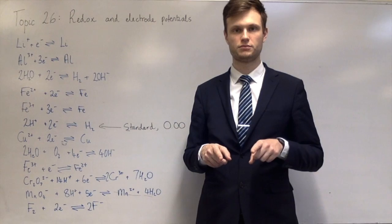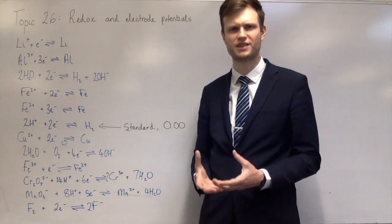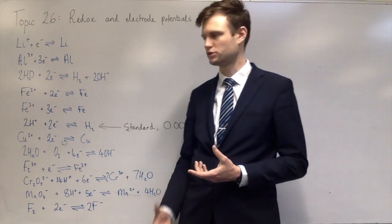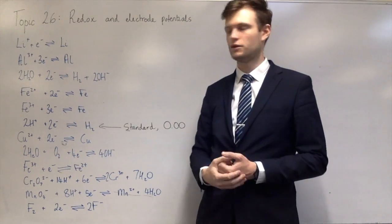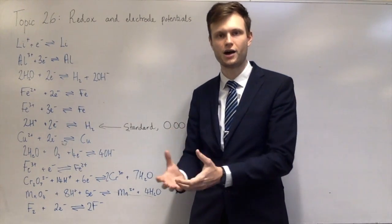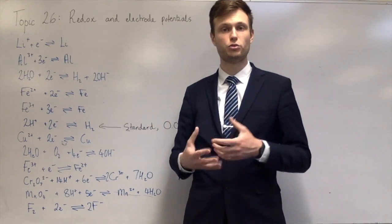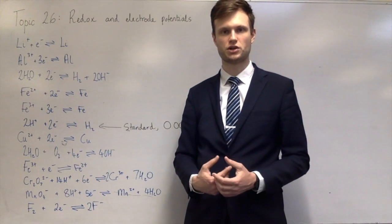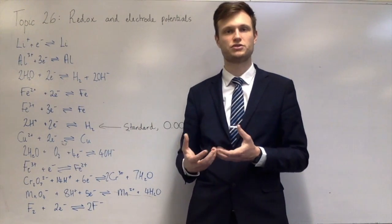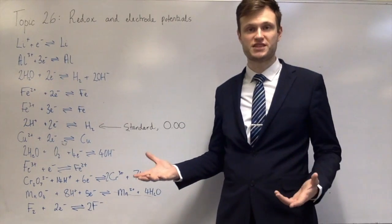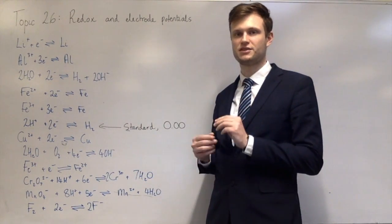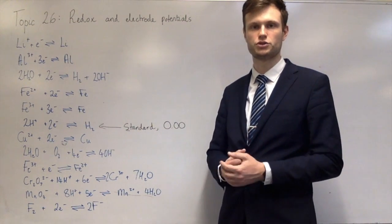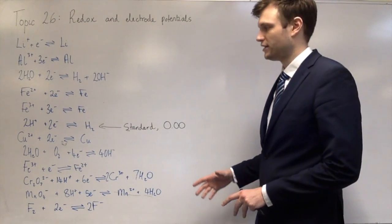You can measure these voltages if you set up one half of the reaction and the other half and put a voltmeter between them. Each half equation makes one electrode. You pick two, each forms one half of a cell, and the voltage is determined by how different they are in terms of oxidation and reduction. To keep it standard, you use standard conditions: room temperature and pressure, and one molar solutions.